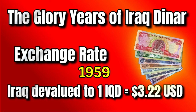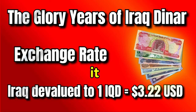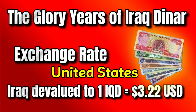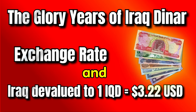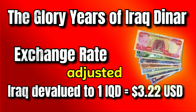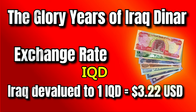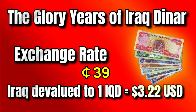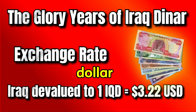In 1959, Iraq devalued the dinar and pegged it to the U.S. dollar at a rate of 1 IQD equals 2 U.S. dollars and 80 cents. By 1971, the dinar's peg was adjusted to 1 IQD equals 3 U.S. dollars and 39 cents after the U.S. devalued the dollar.